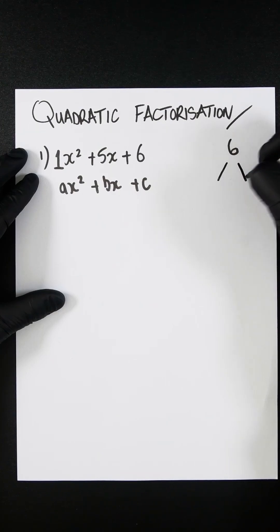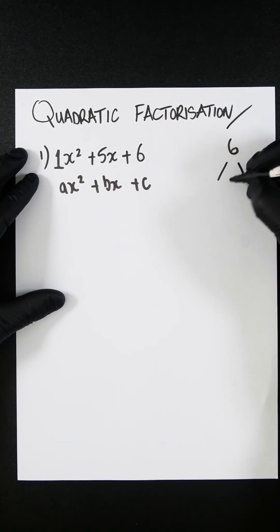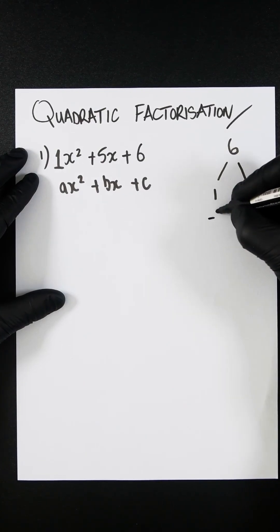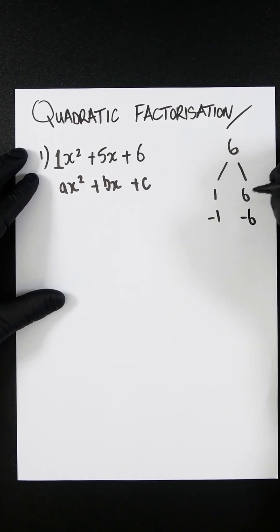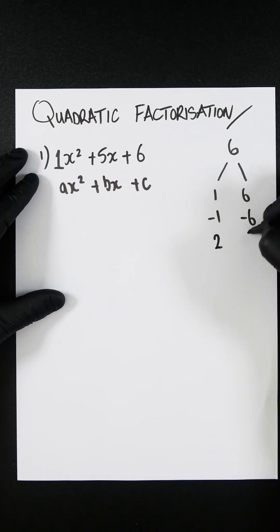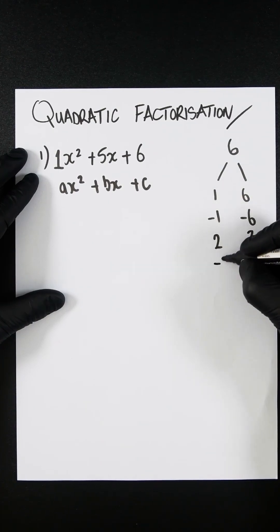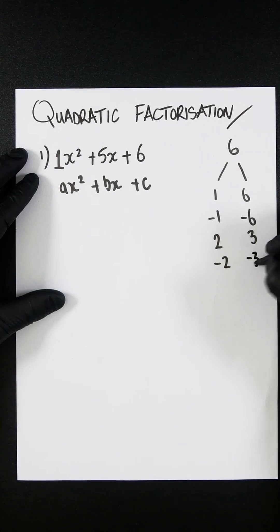You need to find out what all the factors of 6 are. So 1 × 6 = 6, -1 × -6 = 6, 2 × 3 = 6, and -2 × -3 = 6.